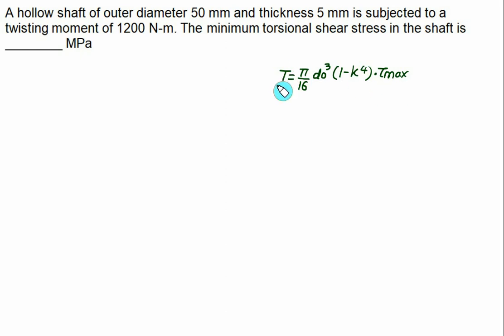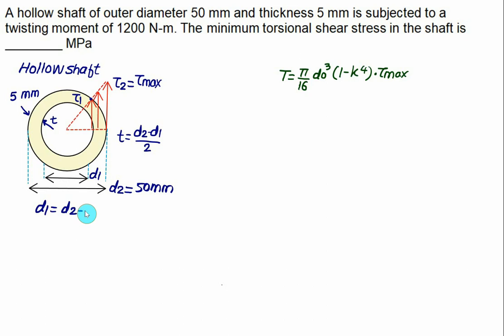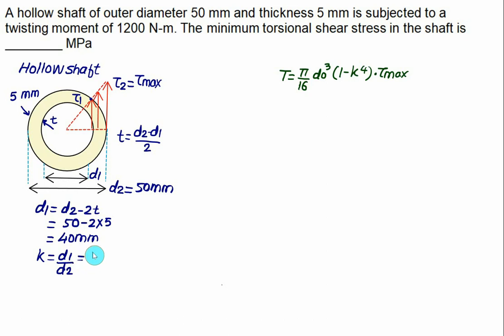This figure represents the hollow shaft. The maximum shear stress occurs at the outer diameter, which is 50 mm, and the thickness is 5 mm. We can calculate d1 as d2 minus 2 times the thickness: 50 minus 10 equals 40 mm. We require the value of k, defined as d1 by d2, where d1 is 40 and d2 is 50, giving k equal to 0.8.